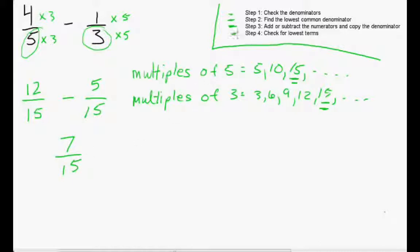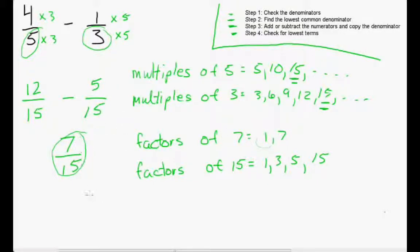Moving on to step 4, figuring out whether this is in lowest terms. We're going to list the factors, just like we did in the last video, of both numbers. So the factors of 7 are 1 and 7, and the factors of 15 are 1, 3, 5, and 15. We can see they don't have anything in common other than 1. Dividing by 1 is not going to change our fraction, so we can state that 7 over 15 is in lowest terms.